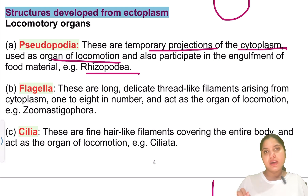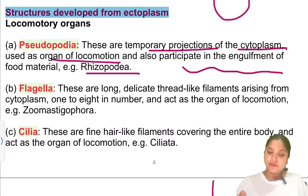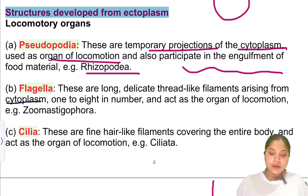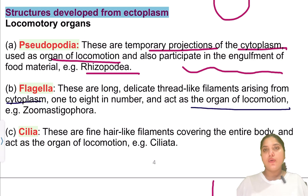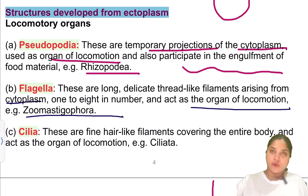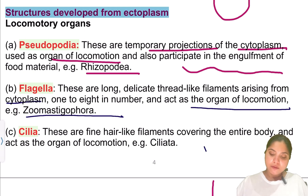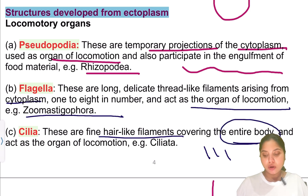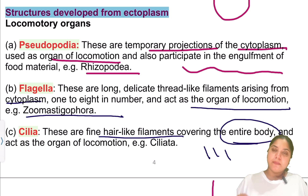The second locomotory organ is flagella — these are long, delicate, thread-like filaments arising from the cytoplasm, one to eight in number, and act as organs of locomotion. The best example is Zoomastigophora. Third, we have cilia — these are fine hair-like filaments covering the entire body, and they also act as organs of locomotion. The best example is Ciliata.